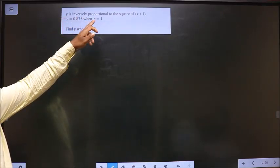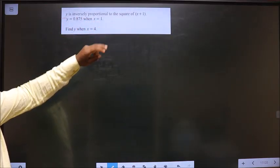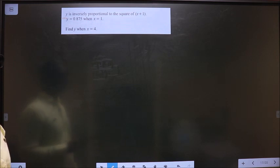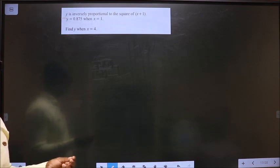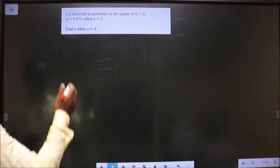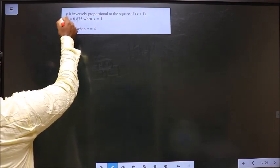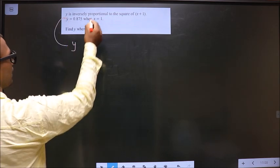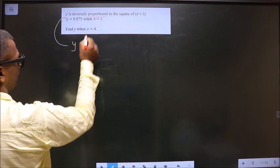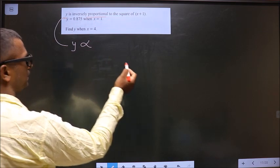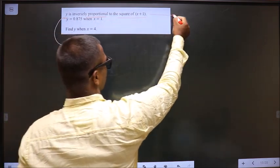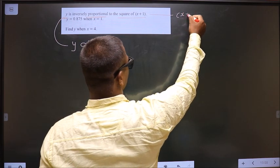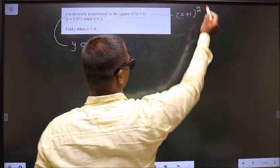y is inversely proportional to the square of x plus 1. So first, let us convert this English statement into mathematical equation in this way. See, starting with y. He said proportional, so put proportional symbol to the square of x plus 1 is nothing but x plus 1 whole square.